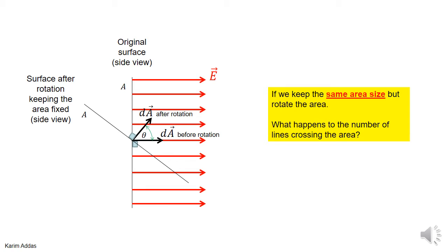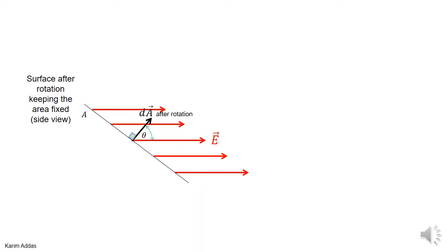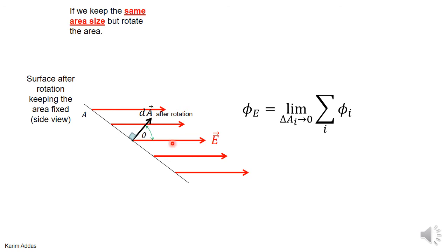Let's see how this works mathematically. The electric field is uniform, so if you evaluate it at any point on the surface it's the same vector. The area vector is perpendicular to the surface at any point. To calculate the total electric flux through the rotated surface, you calculate the electric flux for each element of area, add them all up, and take the limit as the element size goes to zero — giving you E dotted into dA summed over all area elements.